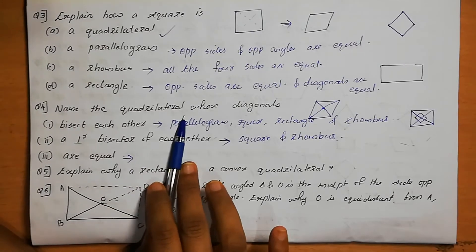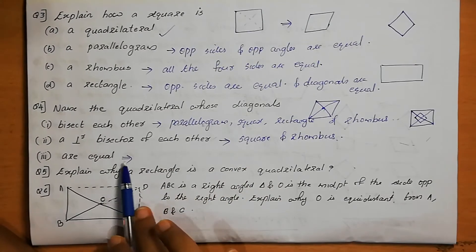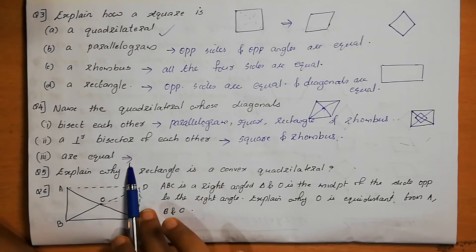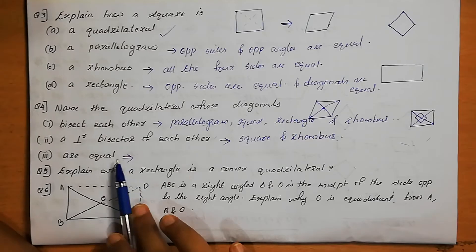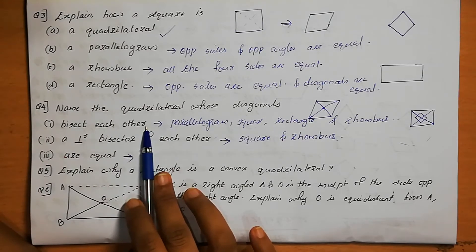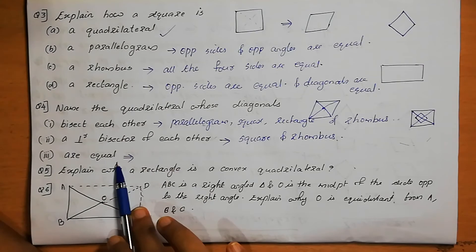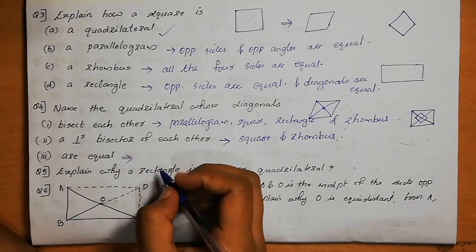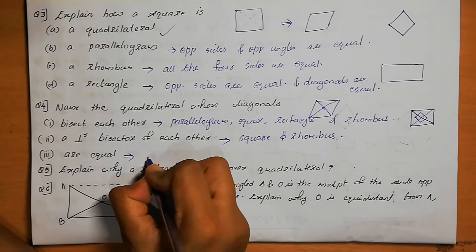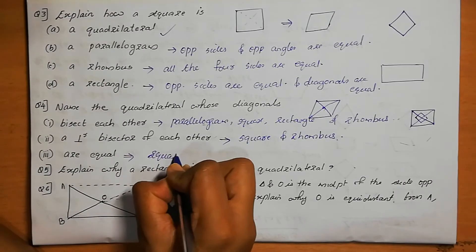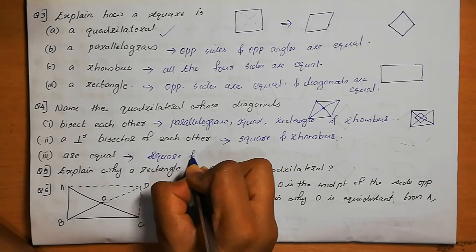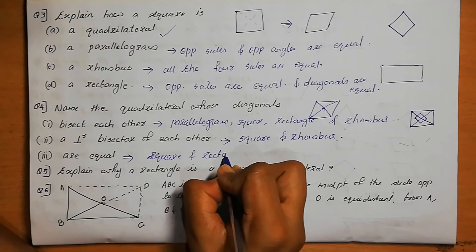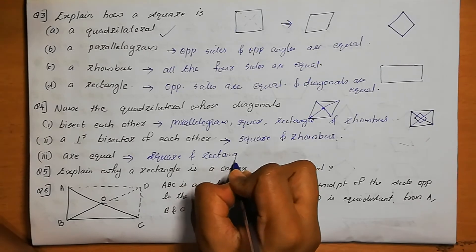A quadrilateral whose diagonals are equal — in which figures are the diagonals equal? Diagonals are equal in a square and a rectangle. So the answer is square and rectangle — diagonals of equal length.